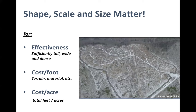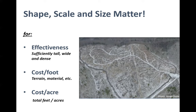In terms of design, shape, scale, and size all matter. This is a drone picture of the first slash wall, the gas line harvest, showing a linear corridor of a now-retired natural gas pipeline running through the center. For effectiveness, the wall needs to be sufficiently tall, sufficiently wide, and — critically — sufficiently dense. These are large structures: 20 feet wide and 10 feet tall, and dense enough that you really can't see through them. If you can see through them, it's probably not dense enough.